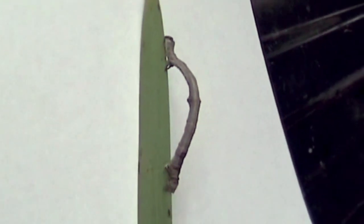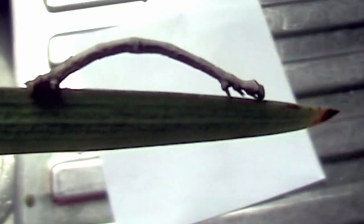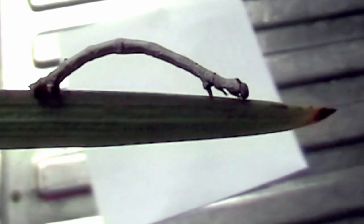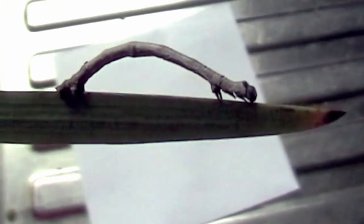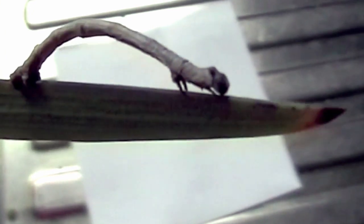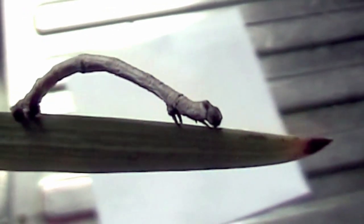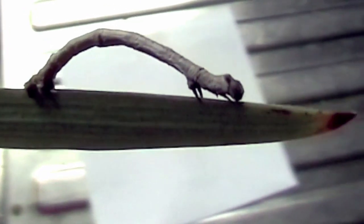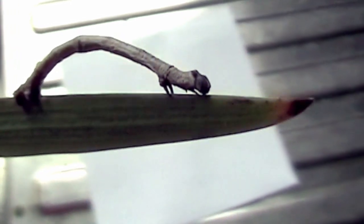It's even got a lump on its back to look like the knot of wood. That's its little head. It's probably got six legs. It looks like it's got four at the front.